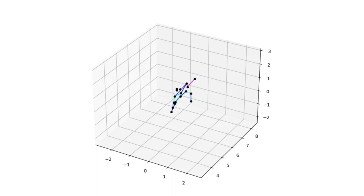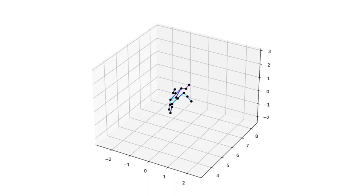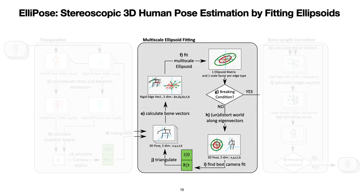Here we can see a result of the first stage. Clearly, it can be seen that the triangulation is distorted in one direction. Therefore, we use our second stage, the multiscale ellipsoid fitting.